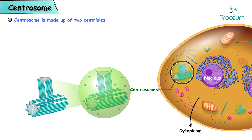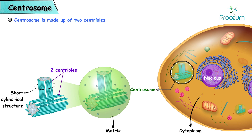The centrosome is made up of two centrioles and surrounding amorphous pericentriolar material known as matrix. The centrioles are short cylindrical structures arranged at right angles to each other.